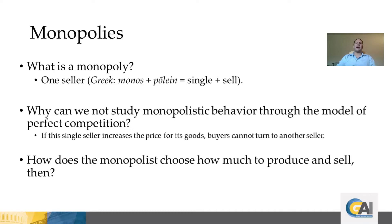Why can't we use the perfect competition model to study monopolistic behavior? The primary reason is that a single seller can increase its price without facing the threat of buyers going to other sellers, simply because there are no other producers in the market. Buyers have no other options, so the monopolist does not face the same competitive pressures as firms in a perfectly competitive market.